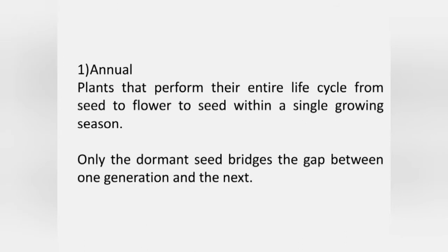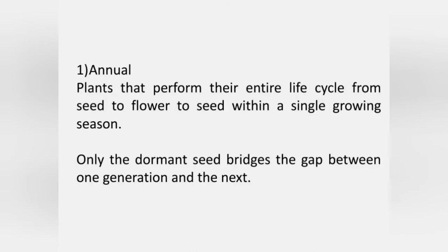Annual plants perform their entire life cycle from seed to flower, flower to seed, within a single growing season. All roots, stems and leaves of the plants die annually. Only the dormant seeds bridge the gap between one generation to another. For example, wheat, watermelon and maize.